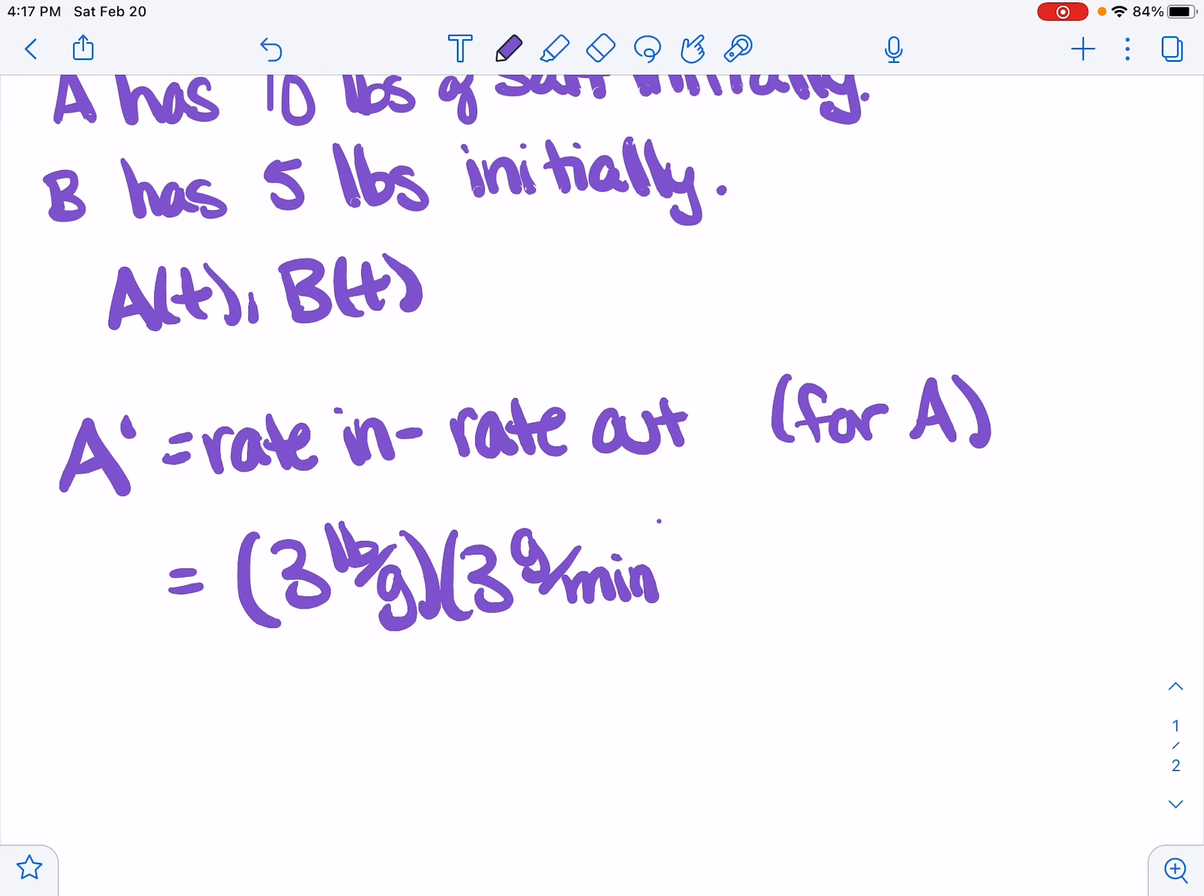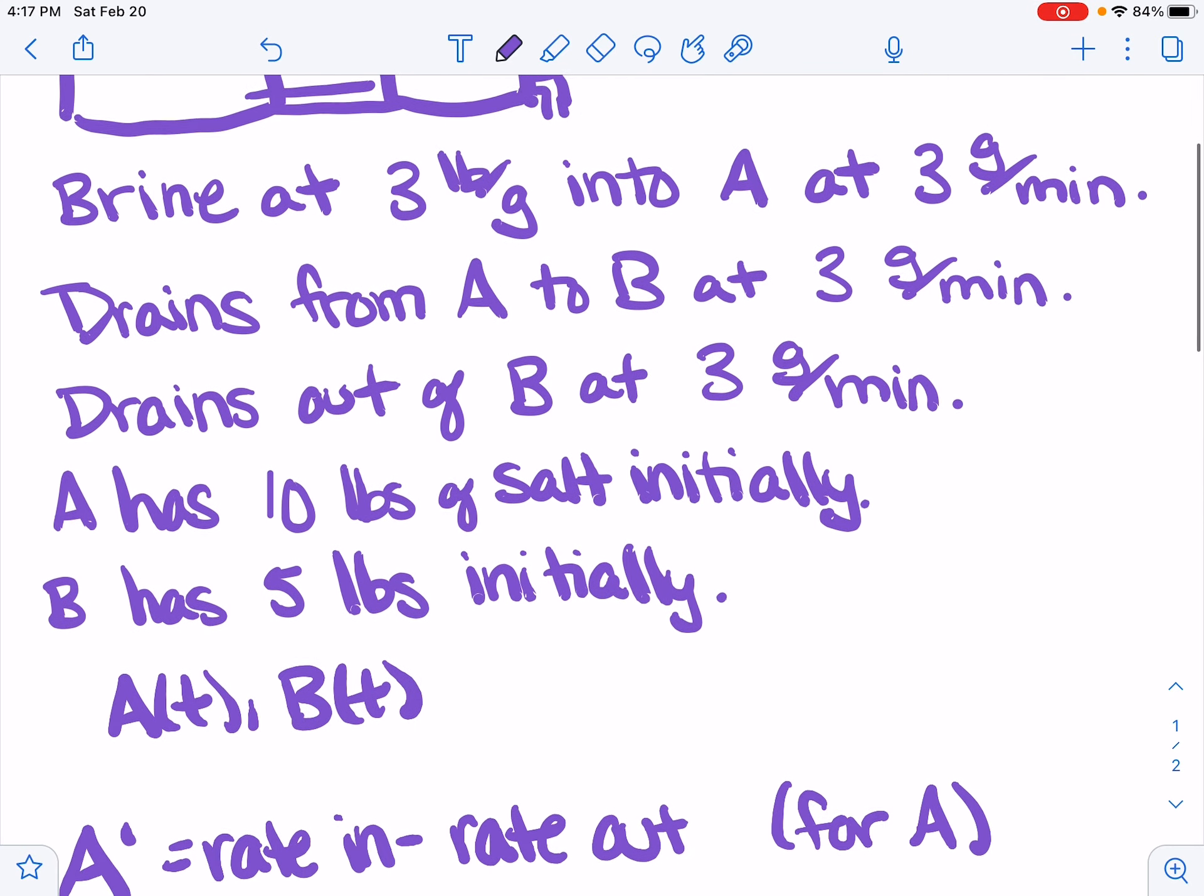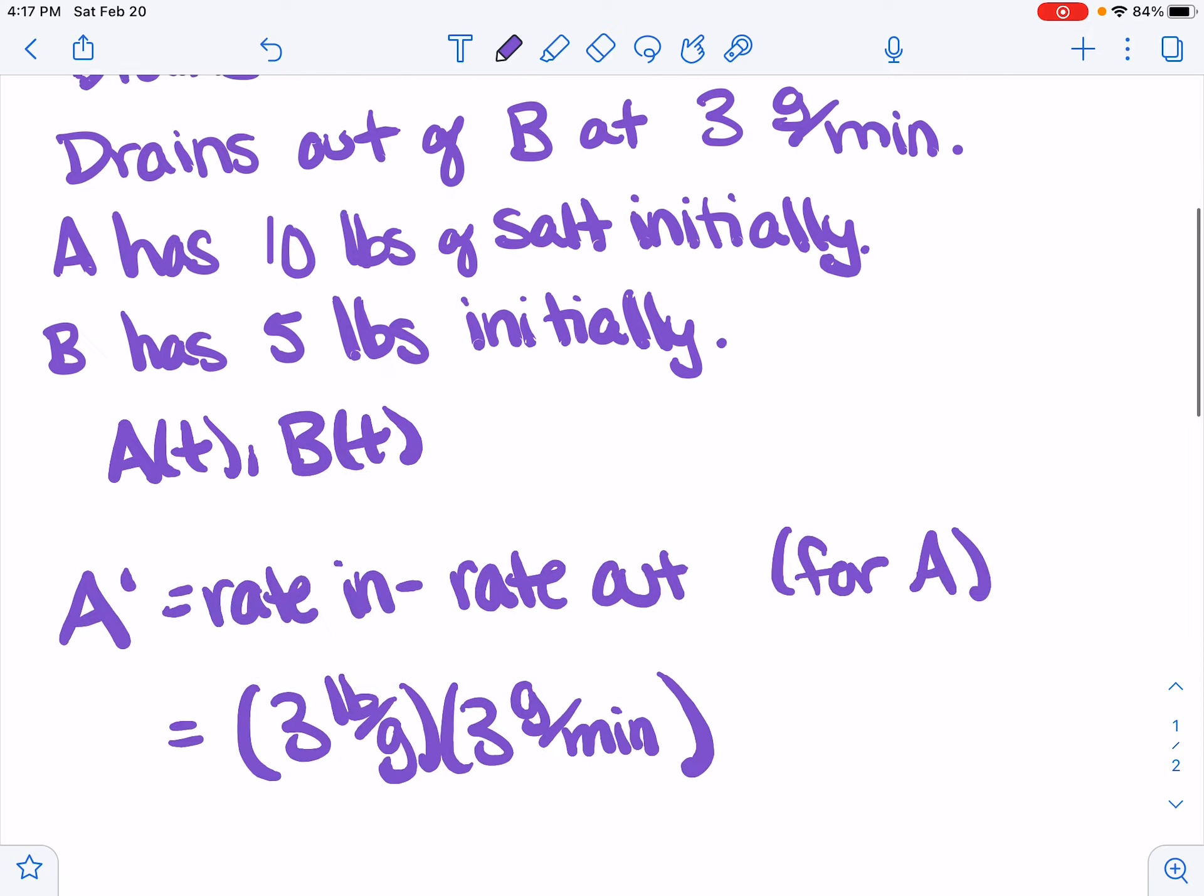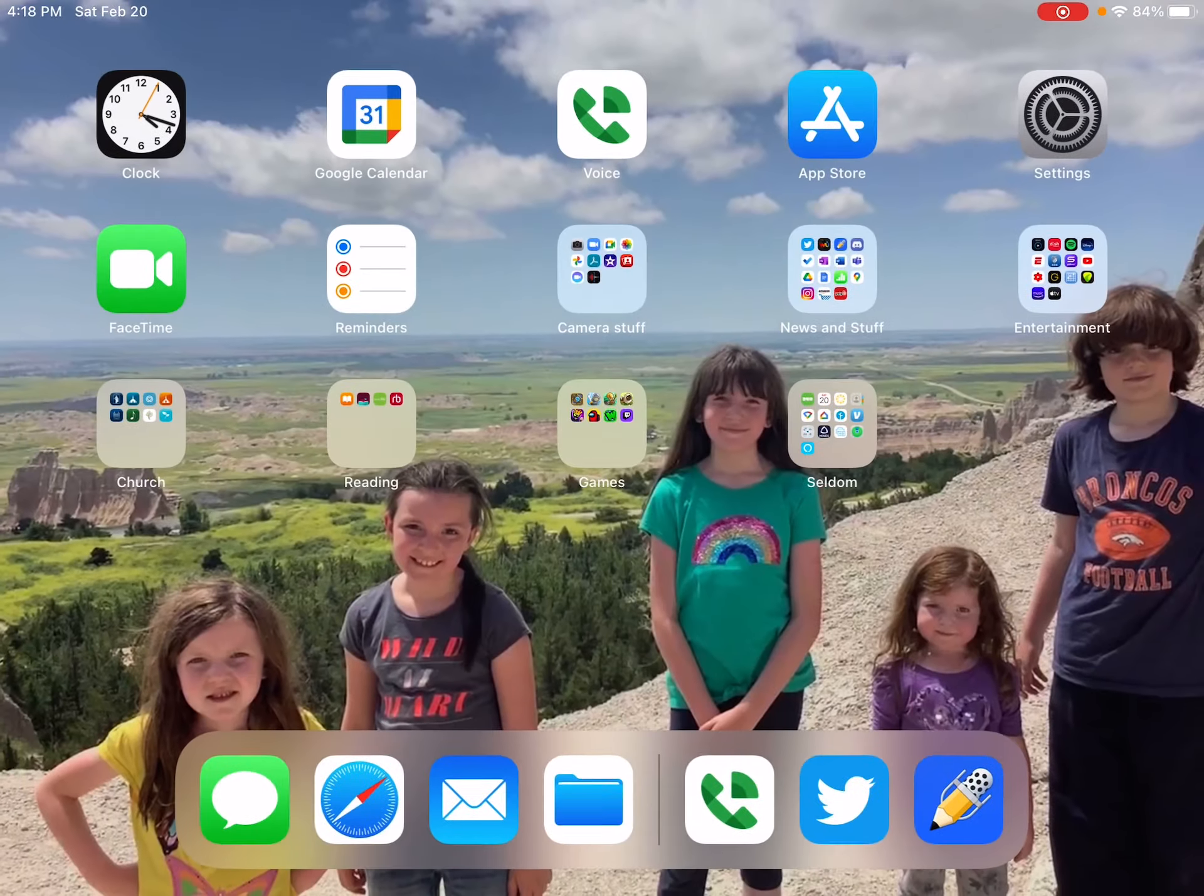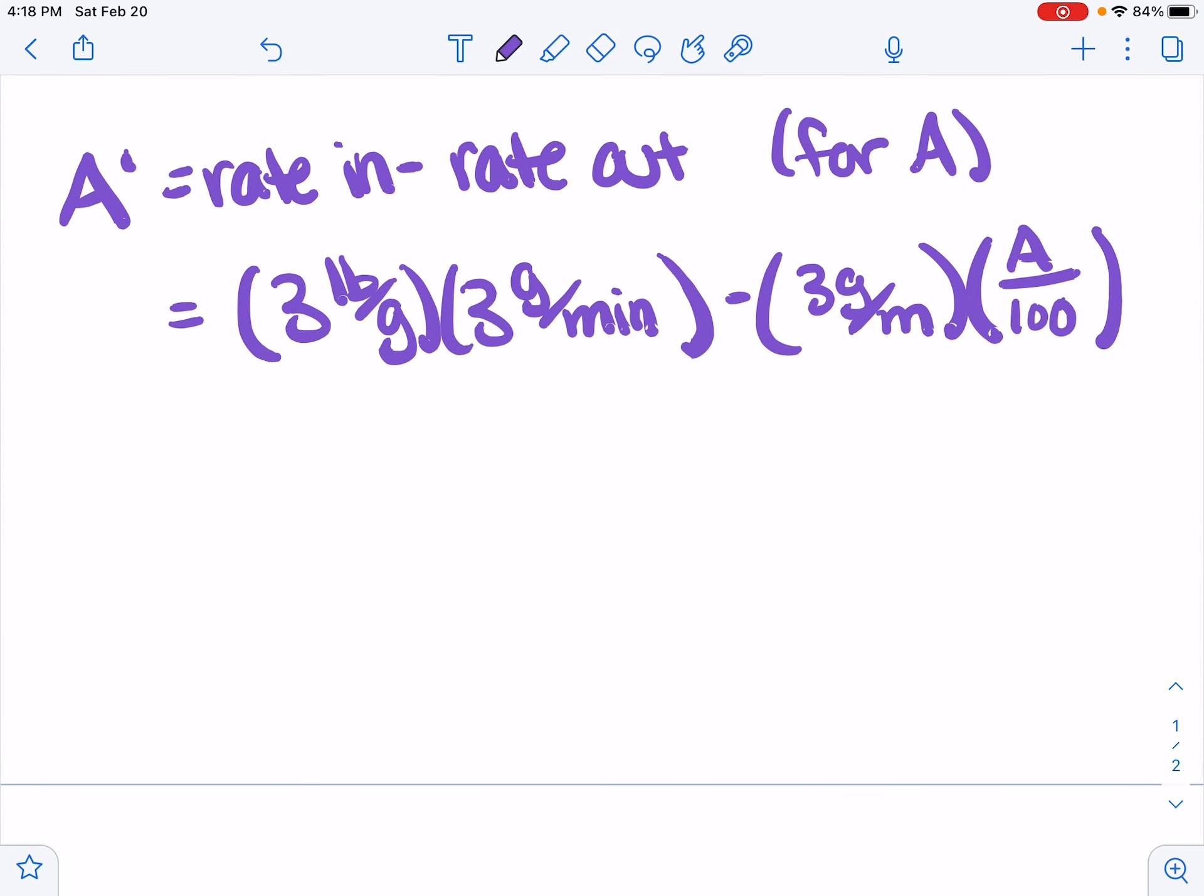We're getting good at this now. We've done a lot of it. And the rate out, it's leaving at 3 gallons per minute. So 3 gallons per minute times the concentration. And the concentration is going to be the amount of salt in A divided by the volume of A. So there's the equation for A. So we have A prime equals 9 minus 3 over 100 times A. Nothing new here. This is the same thing we've been doing.